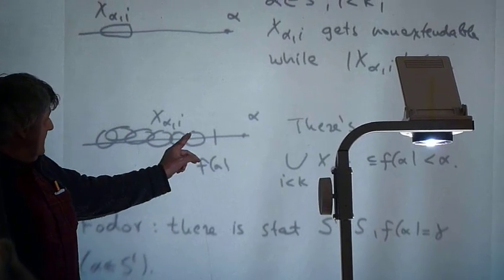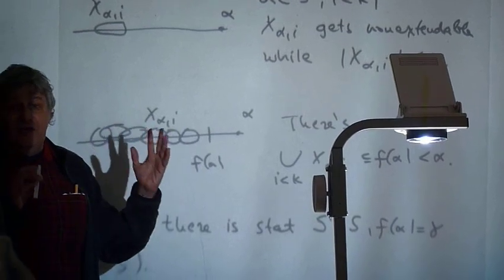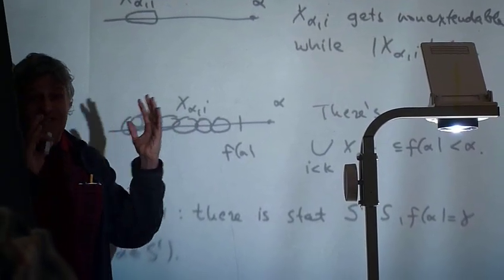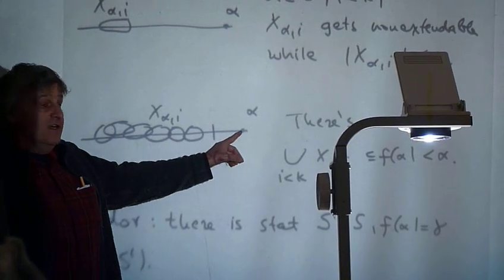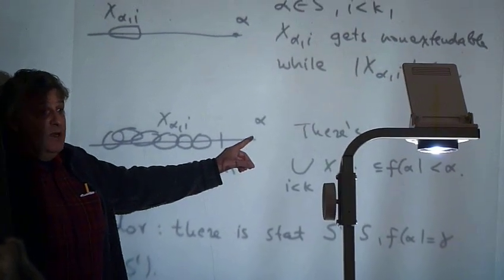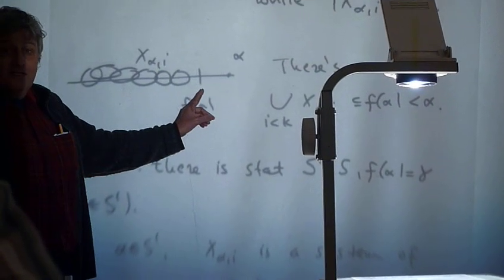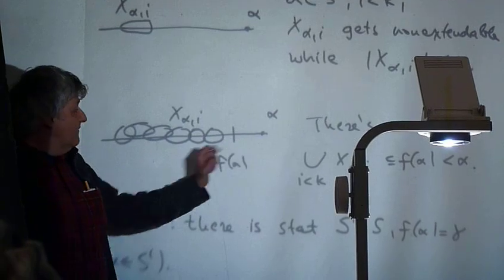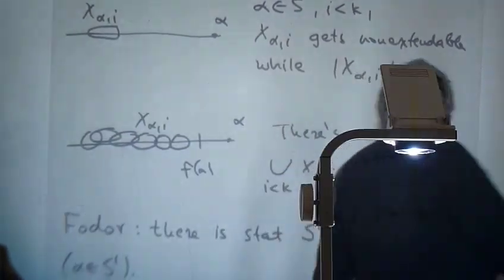Altogether, so we have kappa many sets, each of cardinality at most kappa. This union is also of cardinality kappa. Alpha is of cofinality kappa plus, so this union is certainly a bounded set below alpha. So they have a bound F alpha, which is less than alpha.